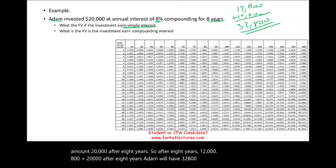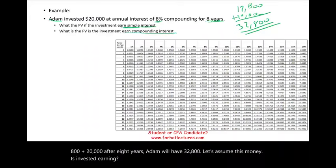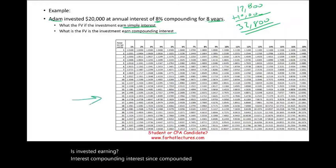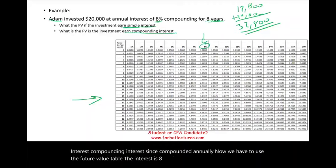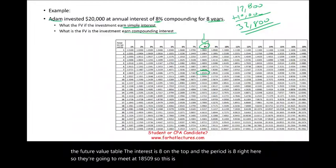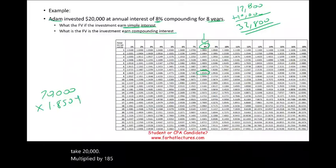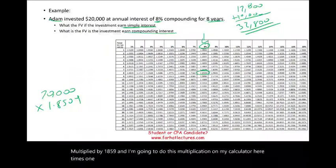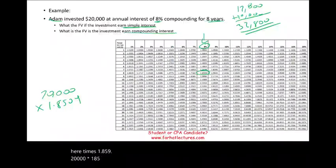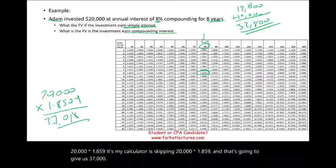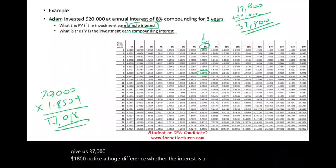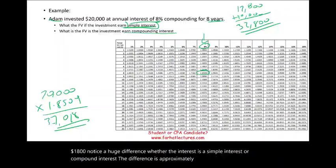Now assume this money is invested earning compound interest, compounded annually. Using the future value table at 8% and 8 periods, the factor is 1.8509. So $20,000 × 1.8509 = $37,018. Notice the huge difference — whether interest is simple or compound matters significantly. The difference here is more than $5,000.